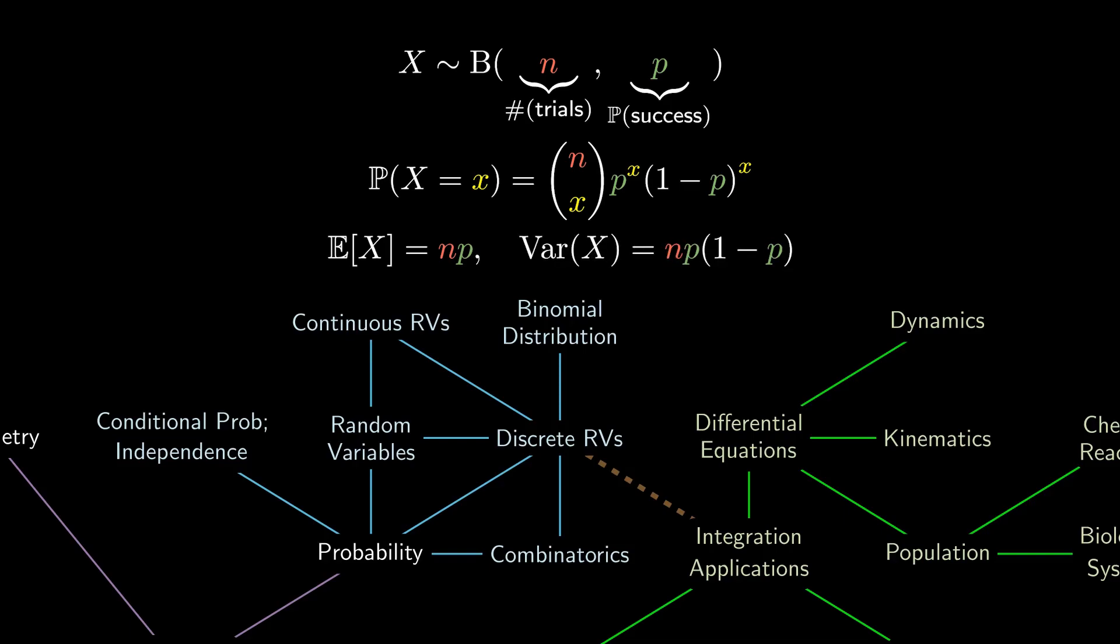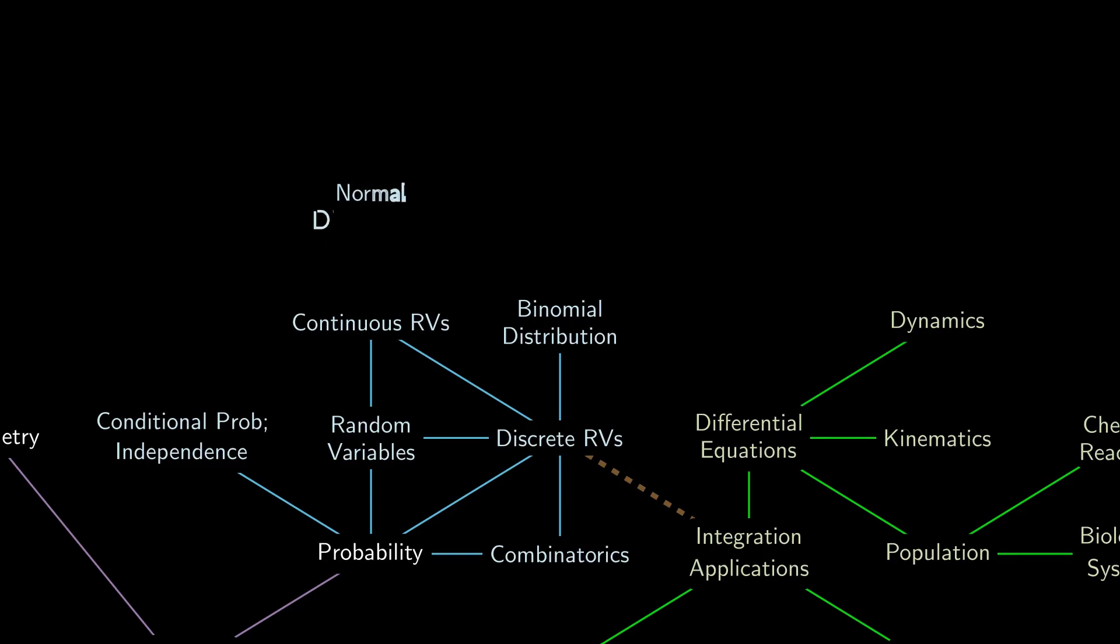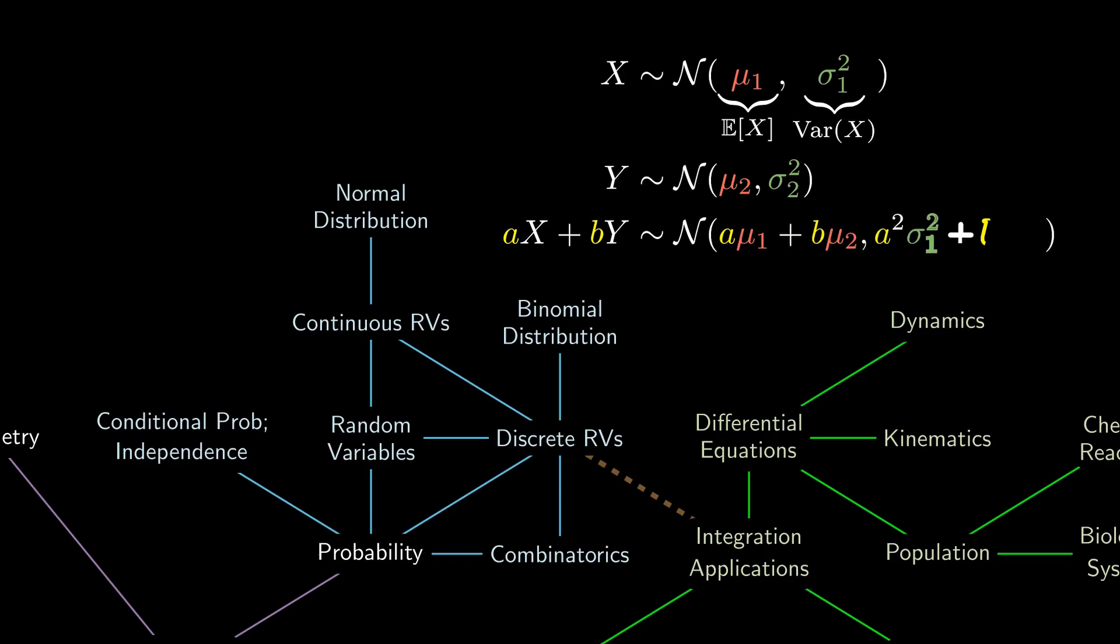And analogously, a really important example of a continuous random variable is a normal distribution, where the first term represents the mean, and the second term represents the variance. If y is another normal distribution that's independent of x, then the sum of x and y must be a normal distribution as well, where the expectation and the variance are calculated using the formulas derived previously.